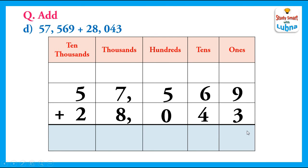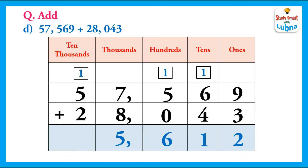Now we start adding from the ones column: nine plus three equals twelve, so we regroup — write two in the ones column and put one carry on the tens column. Then we add the tens: one plus six plus seven plus four equals eleven. We regroup — write one in the tens column and put one carry on the hundreds column. We add the hundreds: one plus five plus six plus zero equals six, so we write six in the hundreds column with no regrouping needed. We add the thousands: seven plus eight equals fifteen — regroup, write five in the thousands column, and put one carry on the ten-thousands column. We add the ten-thousands: one plus five plus two equals eight. So the answer is eighty-five thousand six hundred and twelve.